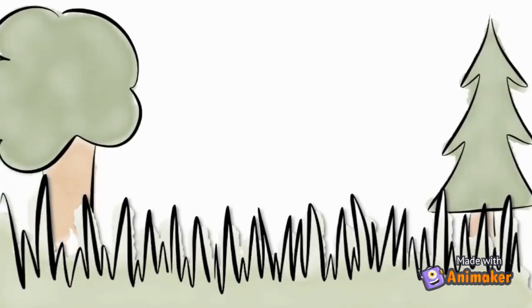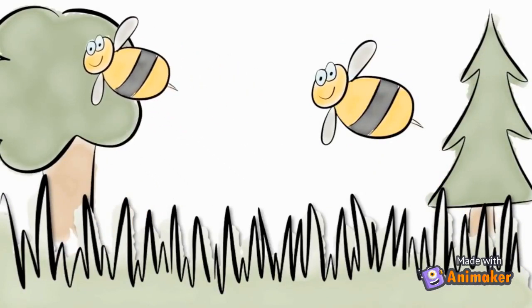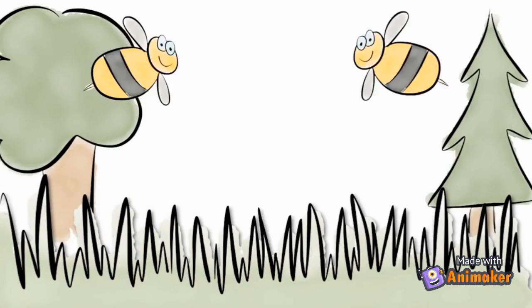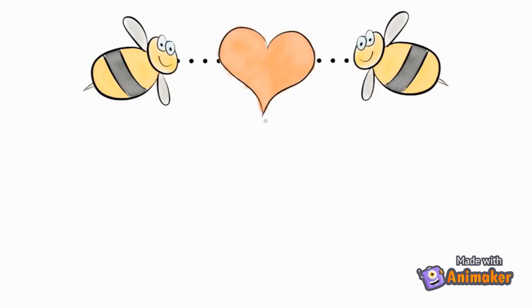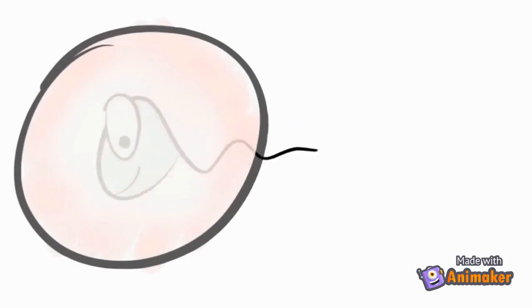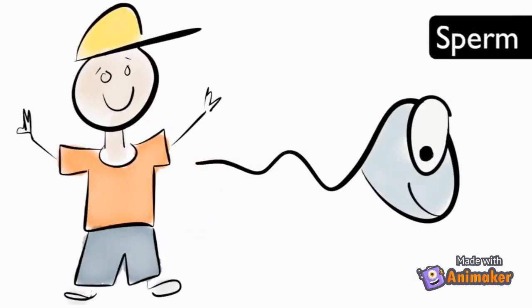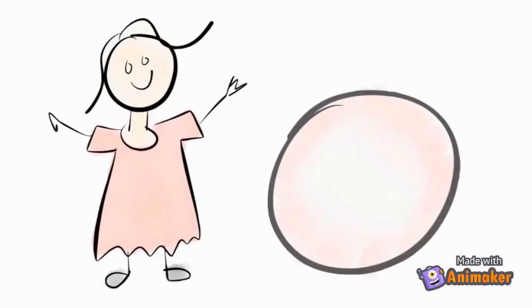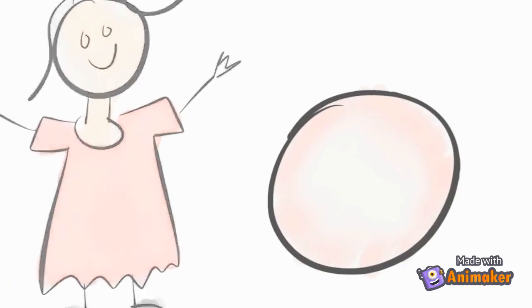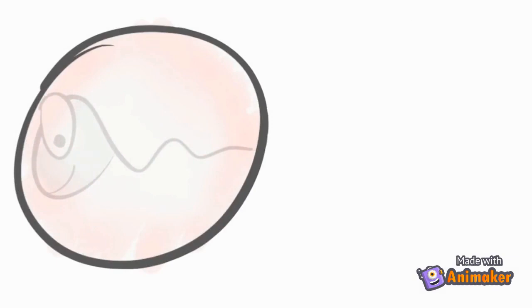The goal of many animals is to live long enough to reproduce and pass their genes on to their offspring. To ensure their genes are passed on for generations, almost all animals go through the process of sexual reproduction. Sexual reproduction is when a male and female sex cell come together to create a unique organism. The male reproductive cell is called the sperm, which contains 50% of the father's genes. The female reproductive cell is called the egg, which contains 50% of the mother's genes. When the two cells join together, the genetic material combines. The joining of reproductive cells is called fertilization.